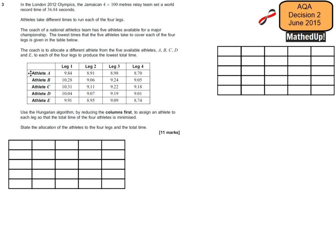The coach is to allocate a different athlete from the five available athletes A, B, C, D and E to each of the four legs to produce the lowest total time.